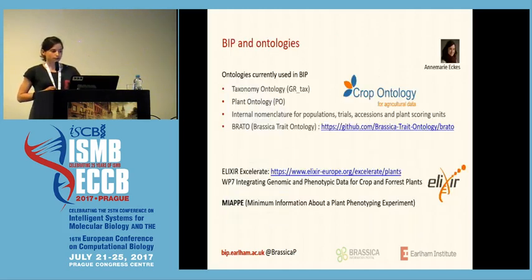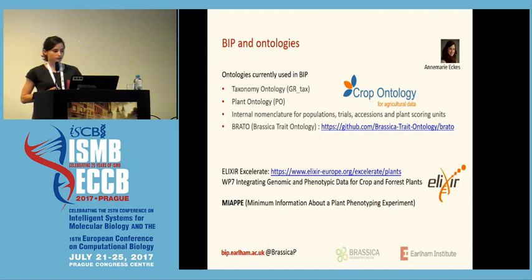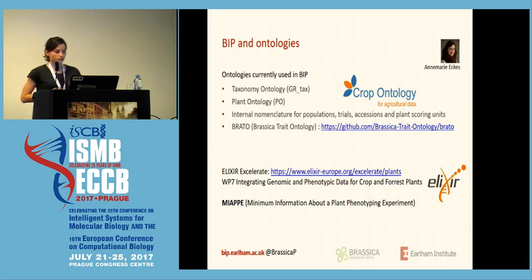To make data interoperable and reusable, you need the use of ontologies. Currently we're using the taxonomy ontology and the plant ontology. Also currently we're using internal nomenclatures for populations, trials, accessions, and plant scoring units.